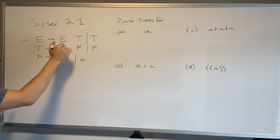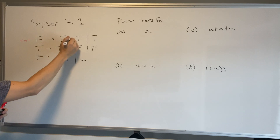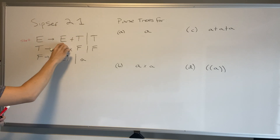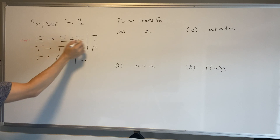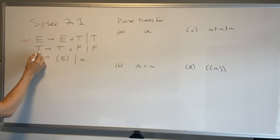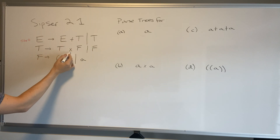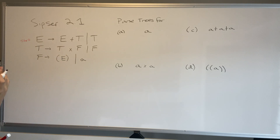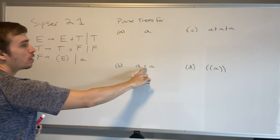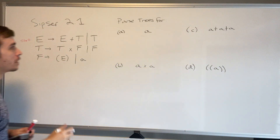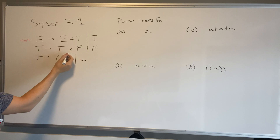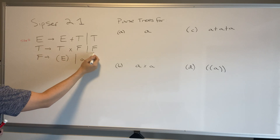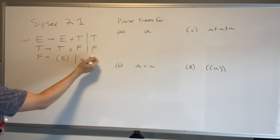For the first rule, E goes to E plus T, or T — those are two different rules. T goes to T×F, where × and + are not operators, they are just terminals, so we see them appearing over here. T is a variable, F is a variable, × is just a terminal. And for the T rule we have two rules again here.